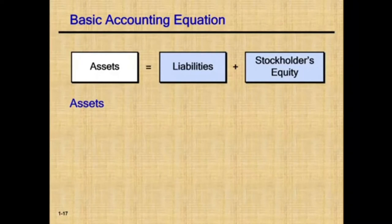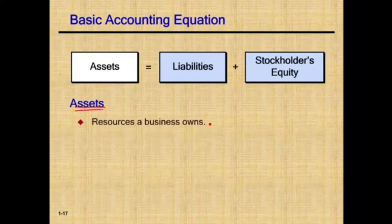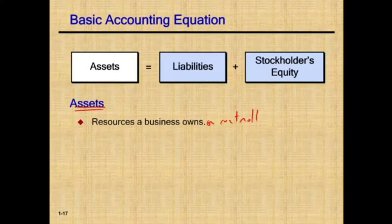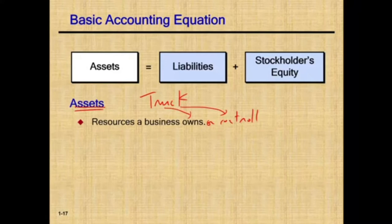We're going to start by looking at the term asset. What is an asset? Assets are resources a business owns or controls — they don't have to own the asset as long as they can control it. For example, a truck is an asset. You can own the truck or you can control it. You might be using the truck but the title is in the bank's name. As long as you can use the truck, it's an asset. Similarly, you might have a building with a mortgage; the bank technically owns it, but since you can use it, it's still an asset.